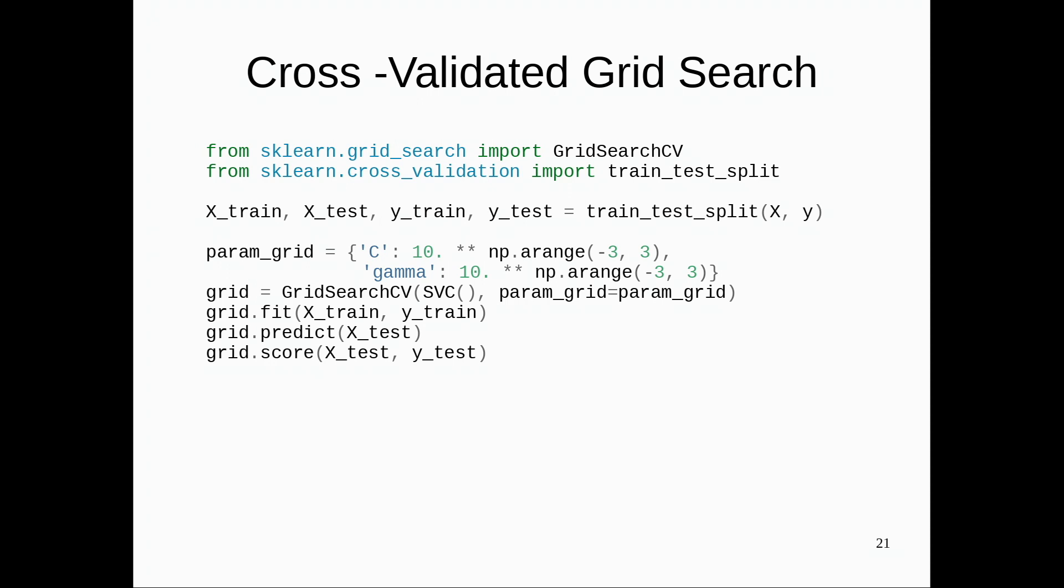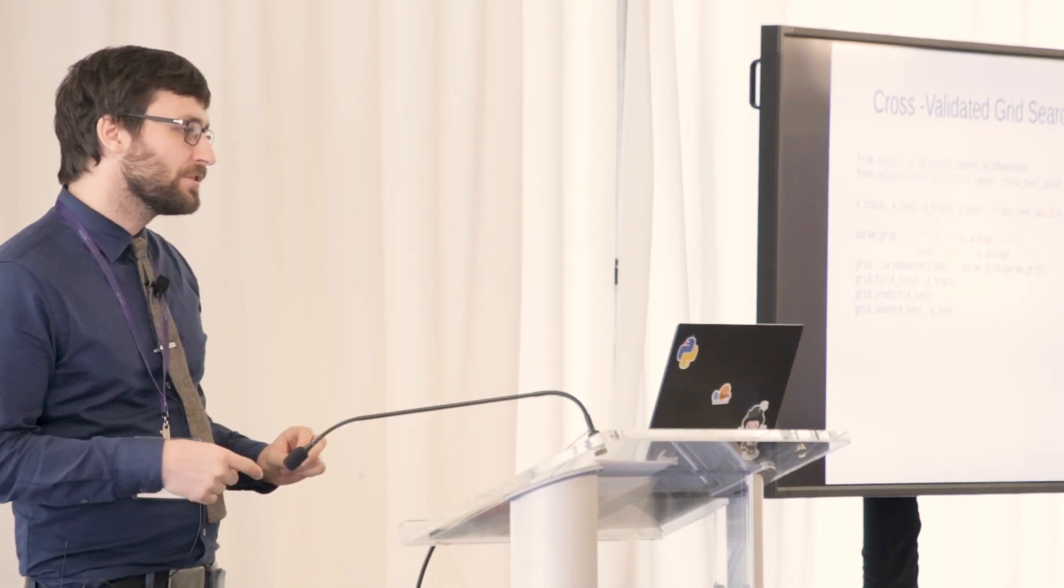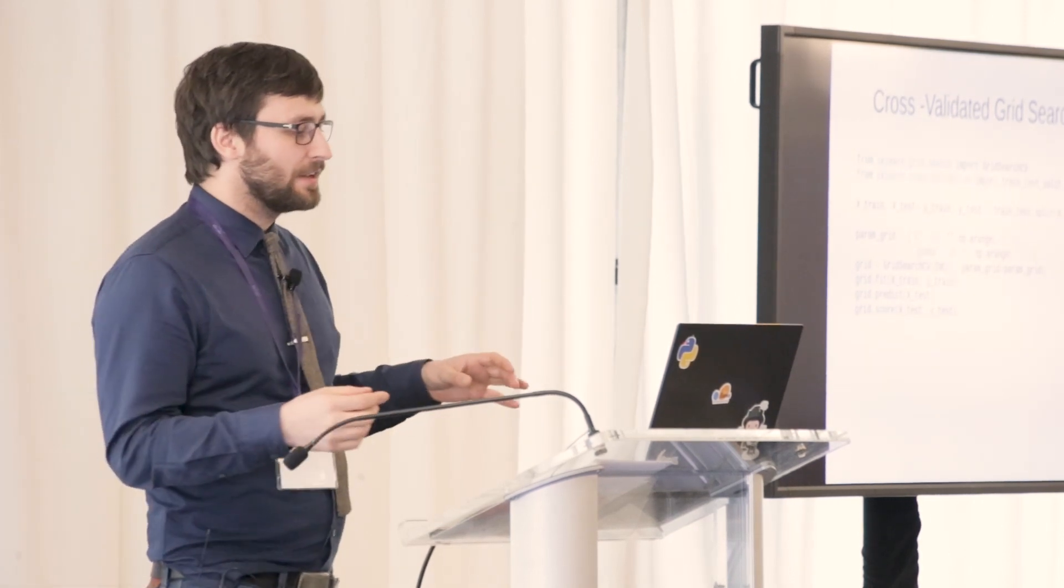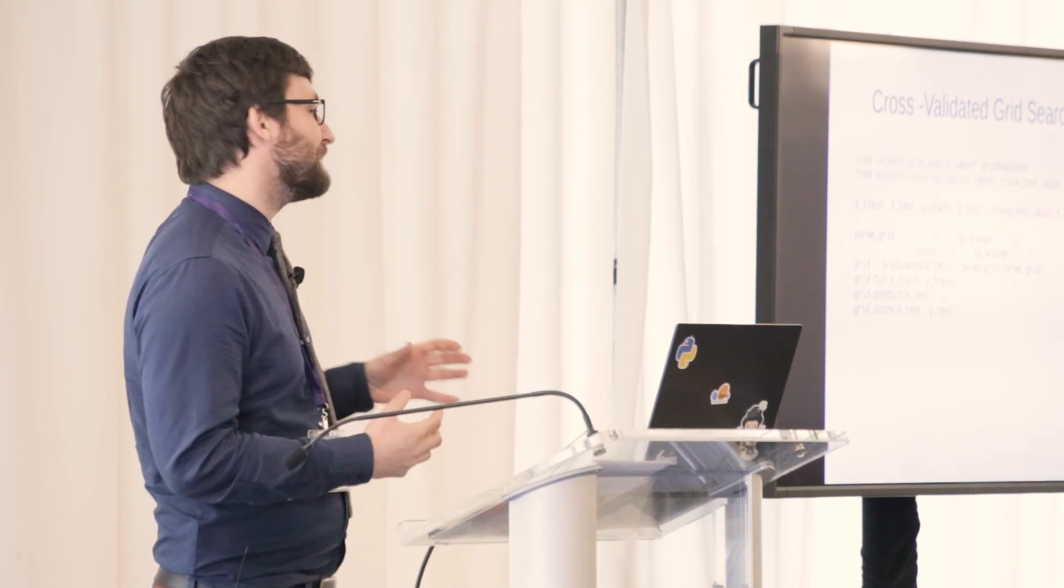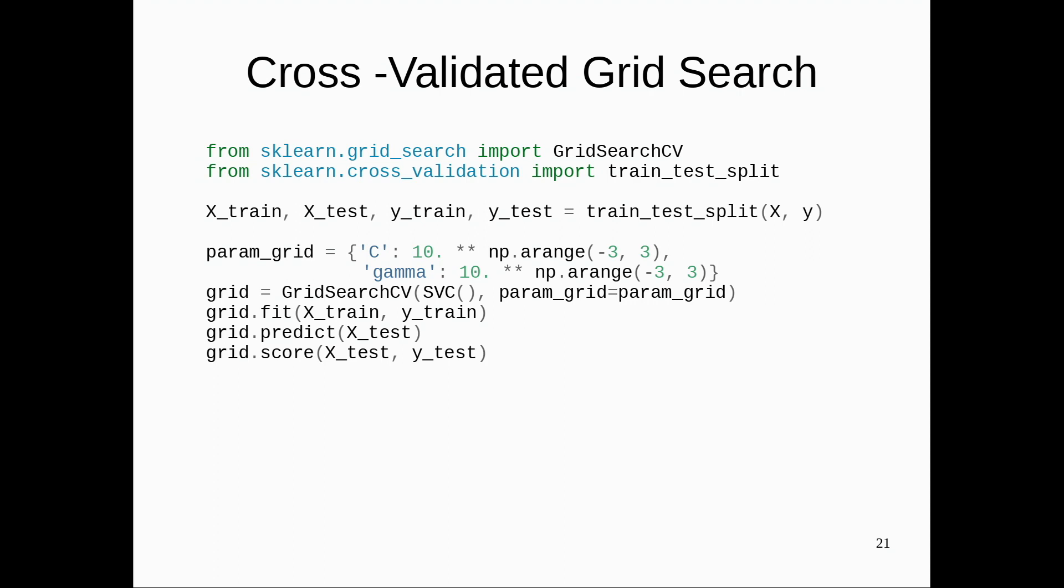The cool thing here is that this GridSearchCV object returns this grid object. And this grid object just behaves like all the other models. So this thing that does grid search for us still has fit, predict, score with exactly the same interface as everything else. Only if you call fit now, what it will do is it will run cross-validation, find the best parameter models according to cross-validation score, according to the metric I give it.